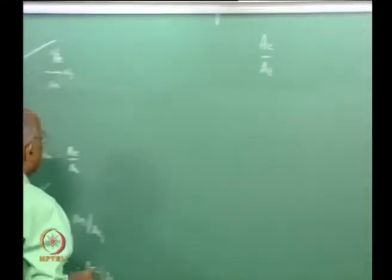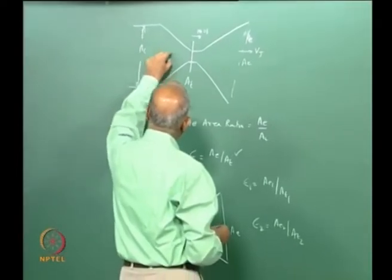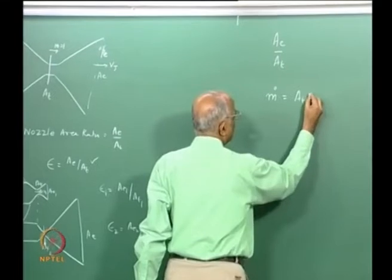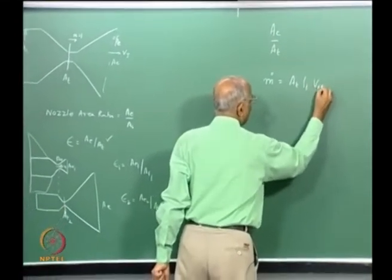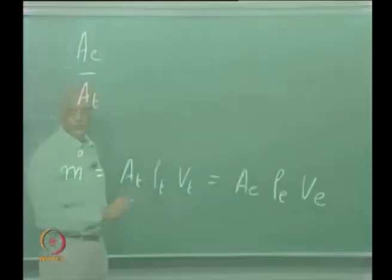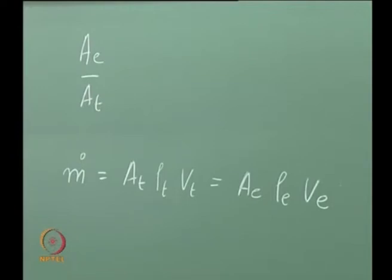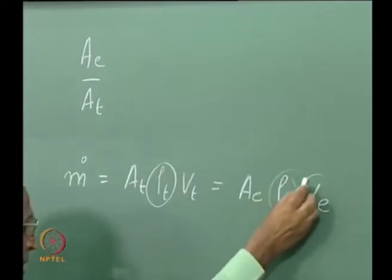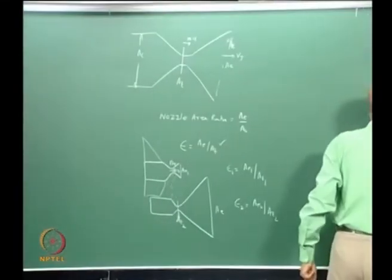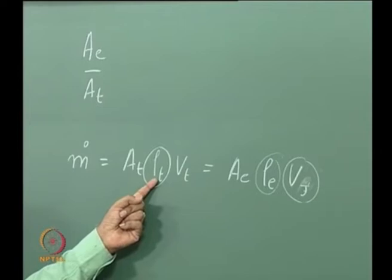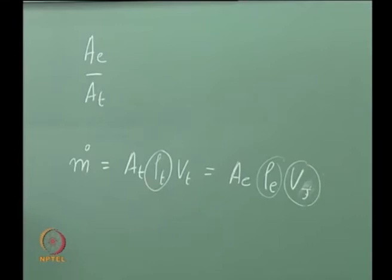I want to find the expression for Ae/At. I just look at continuity: the mass passing through the throat equals the mass passing through the exit. So ṁ = ρt × Vt × At = ρe × Ve × Ae. Therefore, I need the conditions at the throat — namely ρt — and also ρe. Ve is the velocity at the exit, equal to Vj which I have already derived. So I need to find the conditions at the throat.